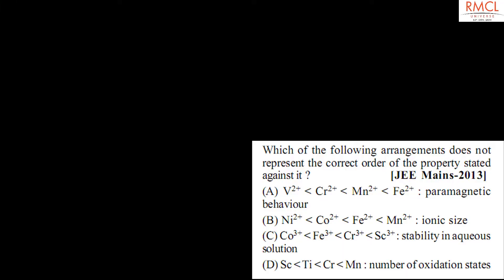The given question is from JEE Main 2013. The question asks: which of the following arrangements does NOT represent the correct order of the property stated against it? In option A, the arrangement is V²⁺, Cr²⁺, Mn²⁺, and Fe²⁺ with respect to paramagnetic behavior.